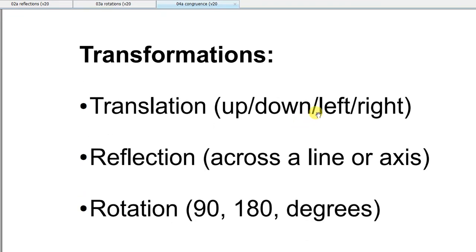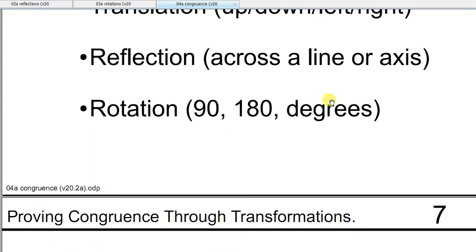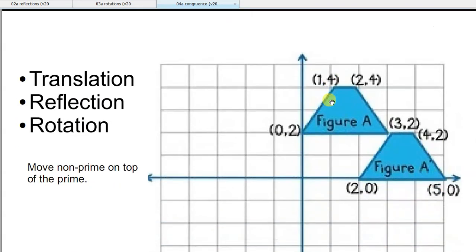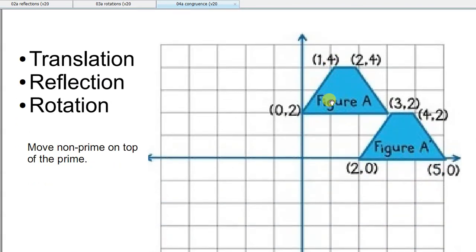The transformations we know are translate, reflect, and rotate — those are the ones we're going to use to prove congruence. How do I get figure A on top of A'? A is the original, A' is the new one. I'm going to move it down — two down, two right — and then they match up perfectly.